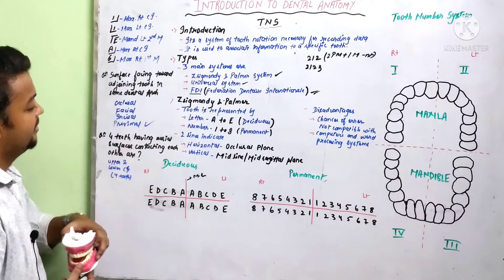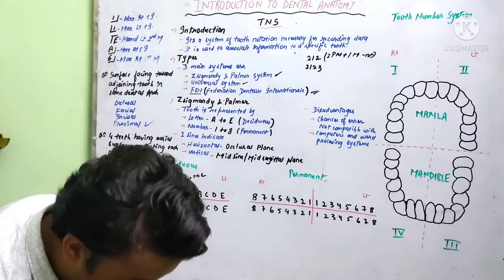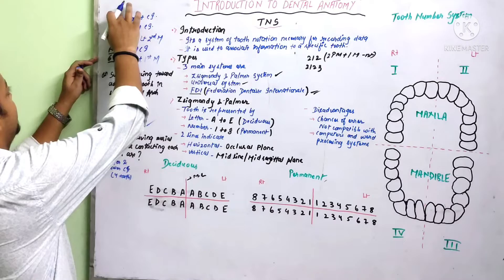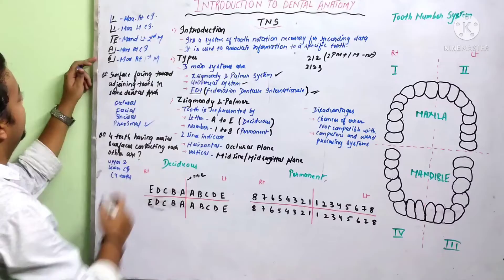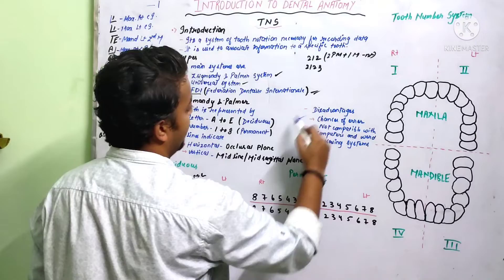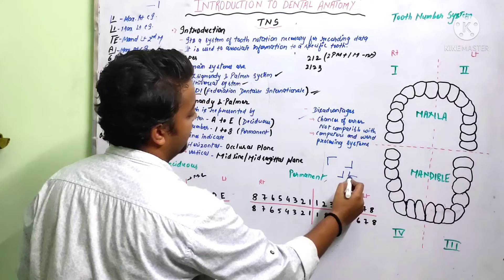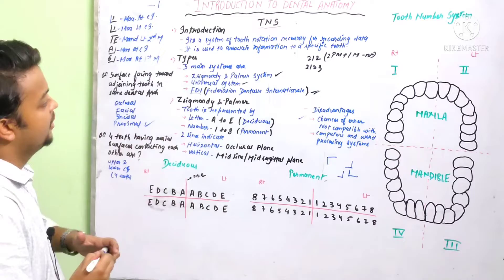That is all about the Zsigmondy-Palmer system. The disadvantages are: first, the chances of error — a simple change of a line in the quadrant symbol can change the entire tooth name. Second, it is not compatible with computers and word processing systems, as the quadrant mechanism symbols are difficult for computers to print.